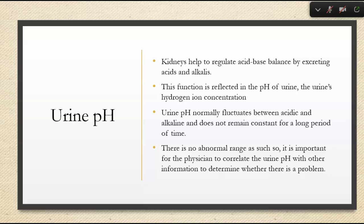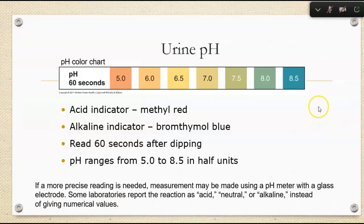We look at urine pH with all of the other urine strip results and potentially blood results and signs and symptoms to put together an overall picture. Urinalysis — you'd think it's just dipping a stick in urine — but this is a very quick, easy, and non-invasive test that can point the doctor in the right direction to figure out what's wrong with the patient. Our acid indicator is methyl red and the alkaline indicator is bromothymol blue, read at about 60 seconds.